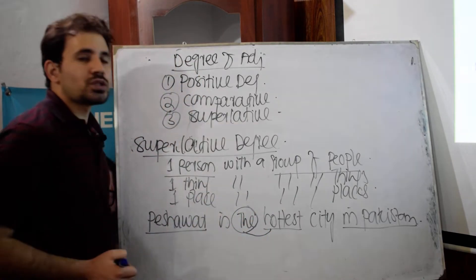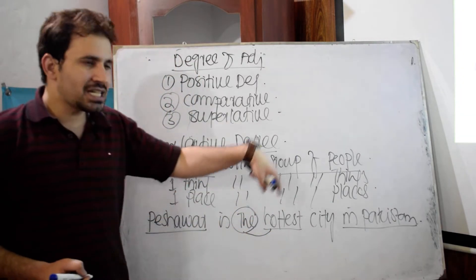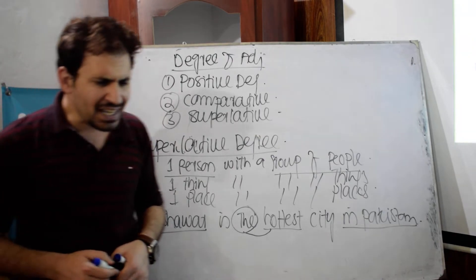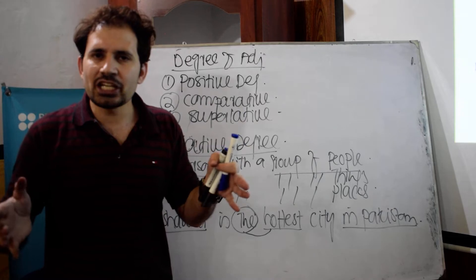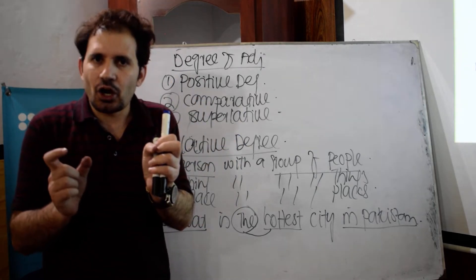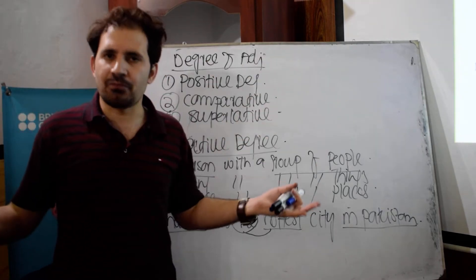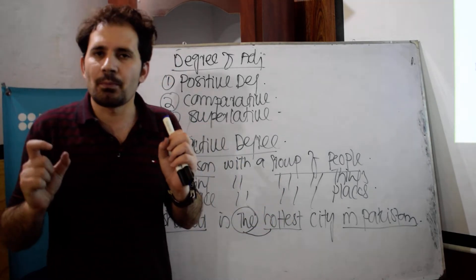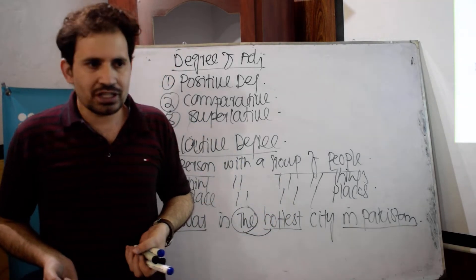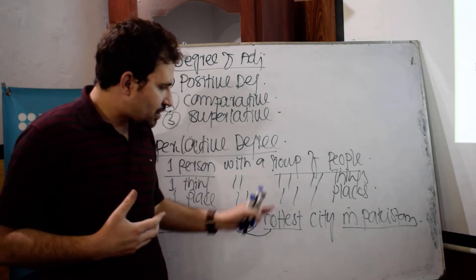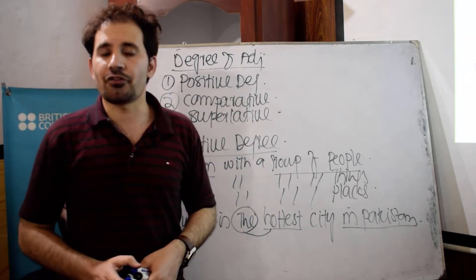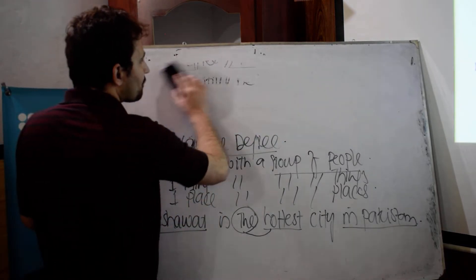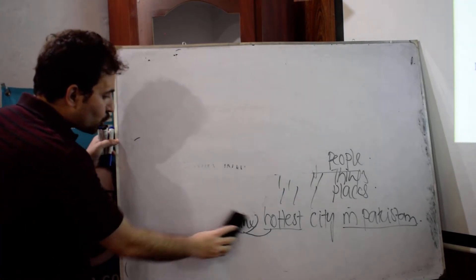Remember, before the superlative degree of an adjective we use 'the': 'the hottest city in Pakistan.' For example, 'May is the shortest month of the year' — in a year we have 12 months, so May is the shortest. That is how we use the superlative degree of an adjective.